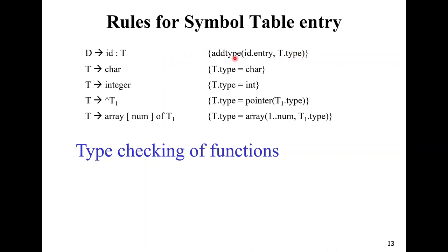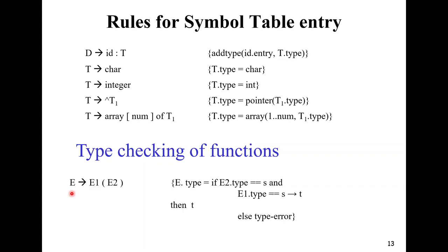For type checking of functions, given E → E1(E2), the translation scheme checks that E2.type equals S and E1.type equals S → T (meaning the input argument is of type S and the return type is T). If so, the expression E is assigned type T; otherwise, type_error is returned. Type checking of functions is an important topic that has been asked in previous university questions.